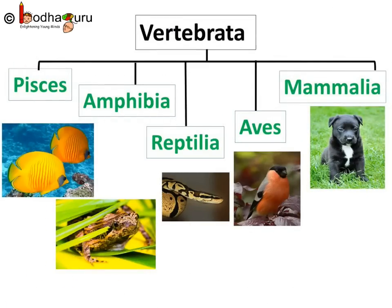Vertebrates are the most advanced animals in nature and they are divided into five classes. Pisces — all fishes belong to this class. Amphibia — as we know, they can live both on land and in water, like the frog. Reptilia — these are cold-blooded animals having scales on their body and they lay eggs. Aves — the class of birds; the body is covered with feathers and the four limbs are modified to wings, hence they can fly.